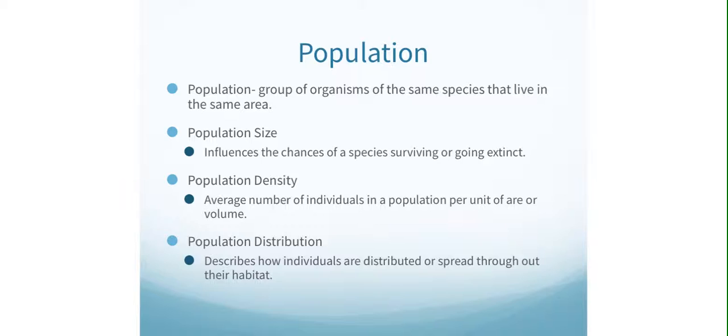Generally, very small populations are at greater risk of extinction. One of the basic things for any living organism is the chance of reproduction. If you can't reproduce, then you can't increase your population size and there's a chance of extinction.